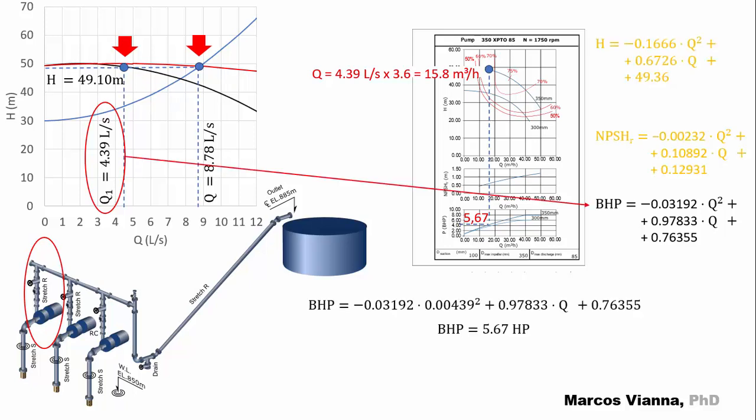We'll start with the BHP. It's easy! We substitute the values and find 5.67 HP. But notice that each pump will need this power. Two pumps will need twice as much.